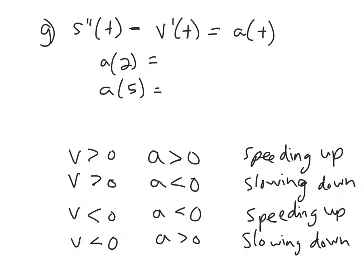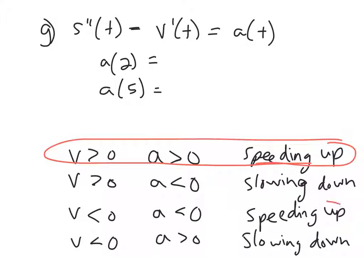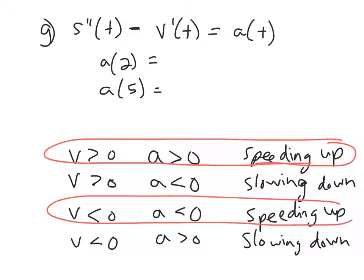The shortcut: look at the two speeding-up cases — in the first, velocity and acceleration are both positive; in the second, both are negative. So the simple rule is: if velocity and acceleration have the same sign, the particle is speeding up. If they have opposite signs, it's slowing down. Write that in your notes.